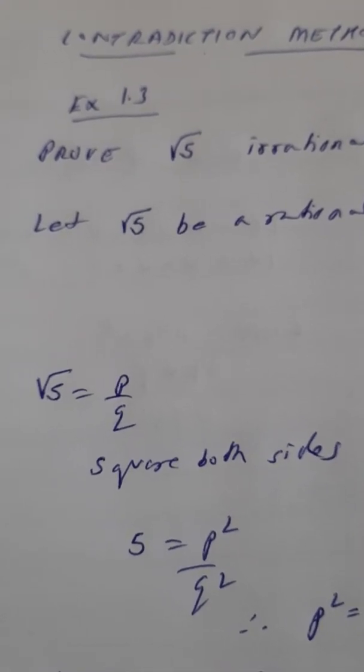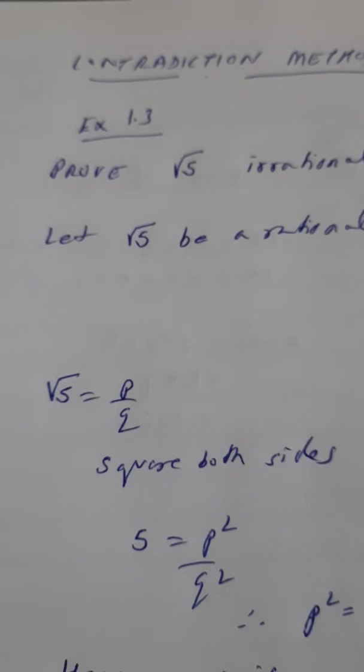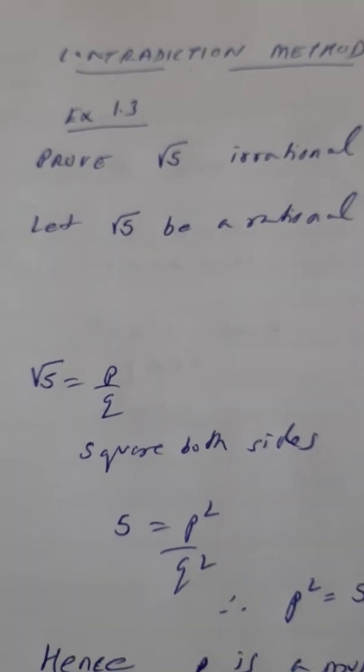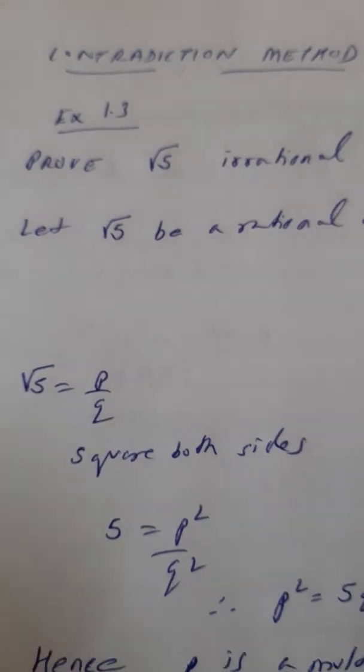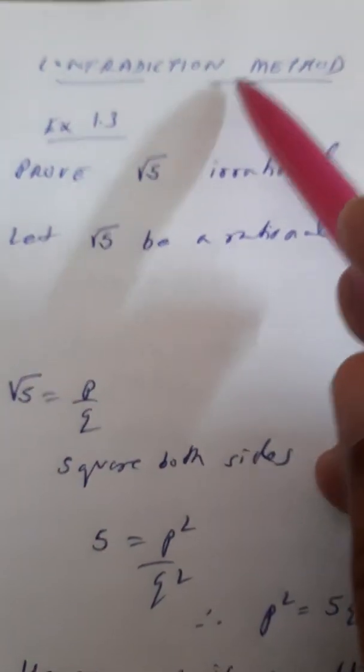So exercise 1.2 is complete. Now we come to exercise 1.3. I had told you yesterday that this exercise is important. We have to prove numbers as irrational and we are going to use a method called the contradiction method.